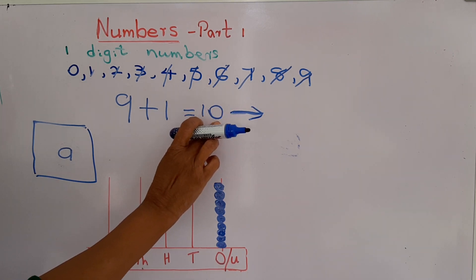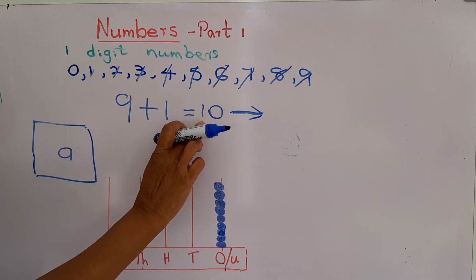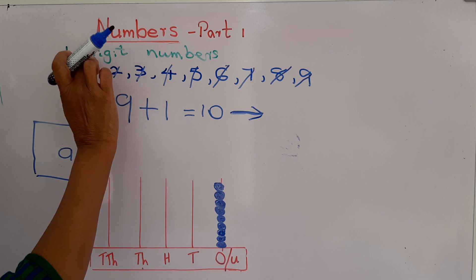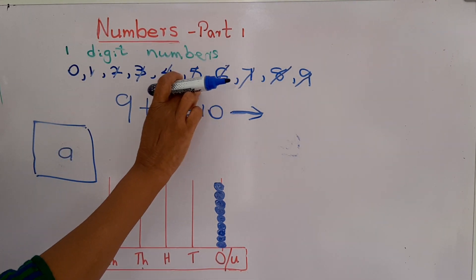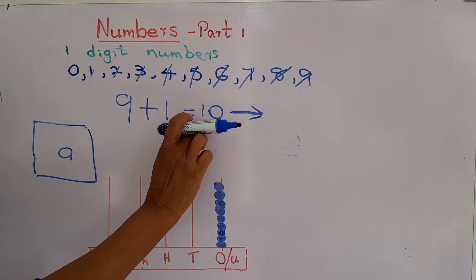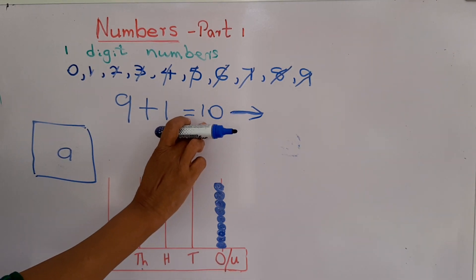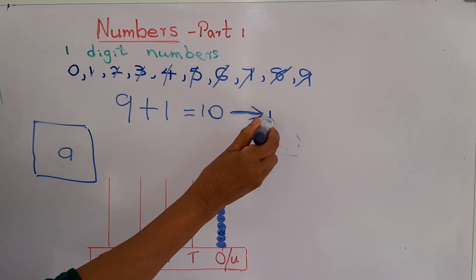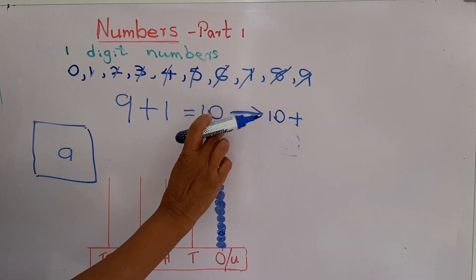Number 10 is a 2-digit number. Why? Because there are 2 places — the ones place and the tens place. How many are there in the tens place? 1. That means 1 ten. How many are there in the ones place? 0.